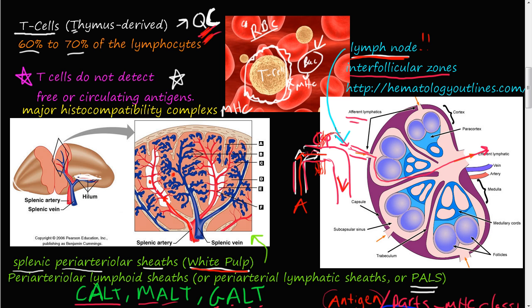The lymphatic system drains into lymph nodes. Afferent lymphatic vessels receive this excess lymph and it passes through the lymph nodes and out the other side. While passing through, it gets filtered. In the interfollicular zones inside the follicles there is a high concentration of T cells, which filter and detect any abnormalities or foreign invaders the immune system needs to be aware of.